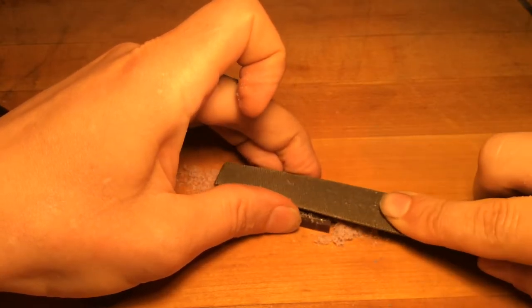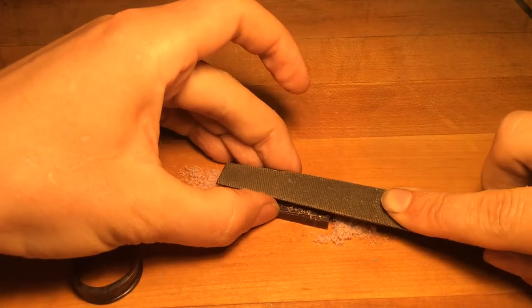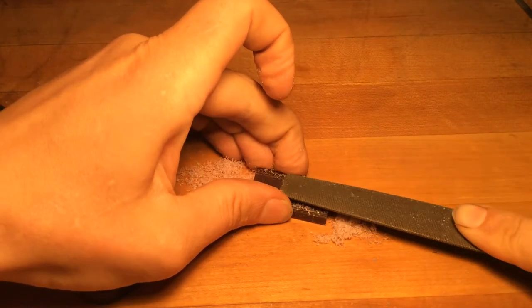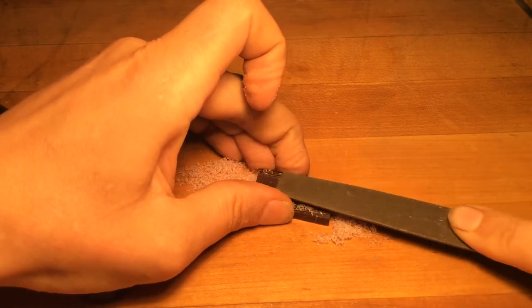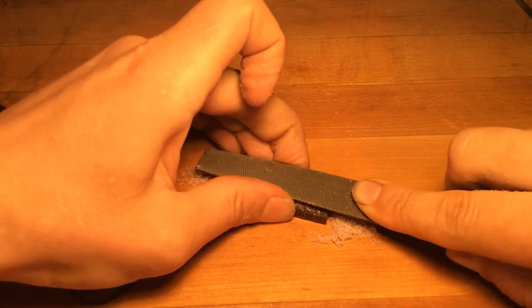But when you change mediums from like wax to metal, all of a sudden the metal working material acts like a rasp versus the wax working material, which is just not going to take off as much.